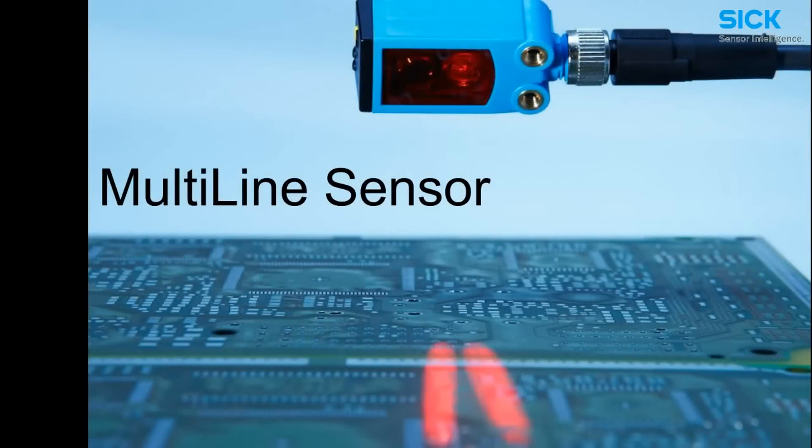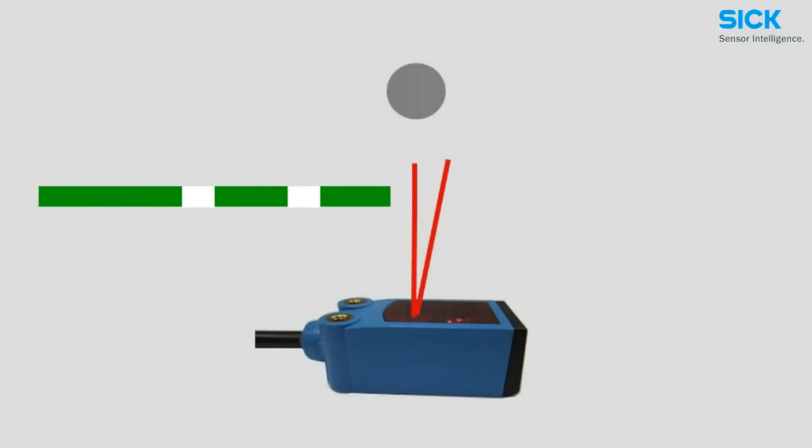The multi-line sensor has two line-shaped light spots that extend the sensing area. Here, the multi-line sensor first starts to detect a target when it interrupts both line-shaped light spots.